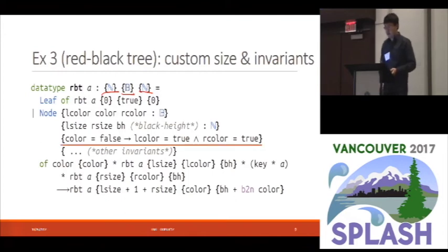The second point I want to make here is that one motivation for having refinement sorts in Timo, other than to support big O sorts, is to encode invariants of data structures. For example, this invariant here means that if the color of a node is red, then the color of both its children must be black.